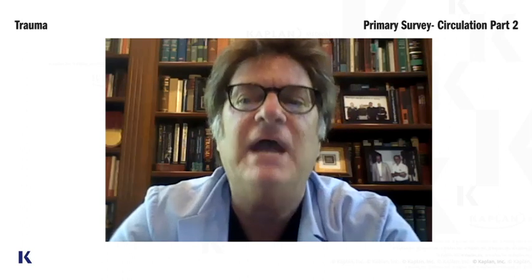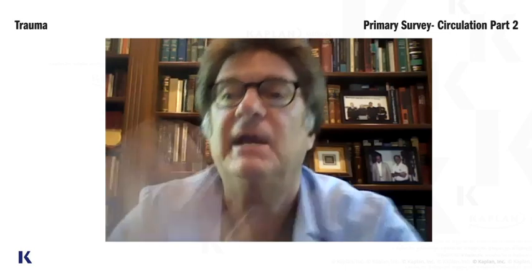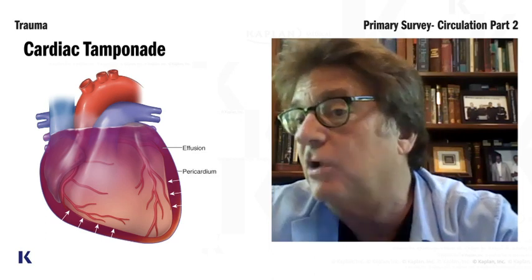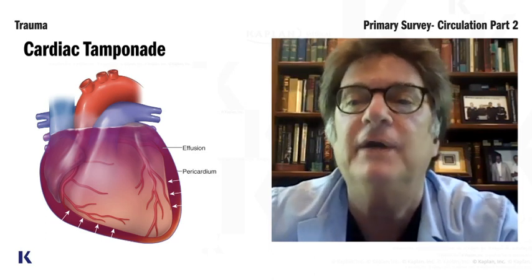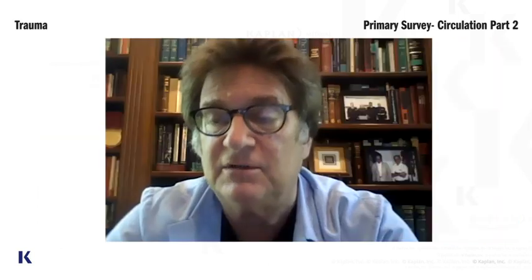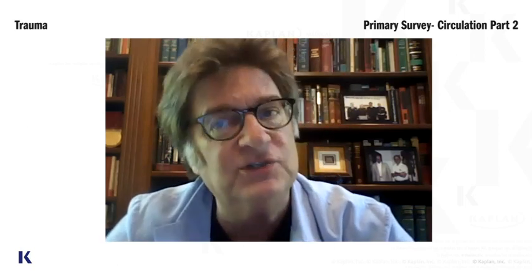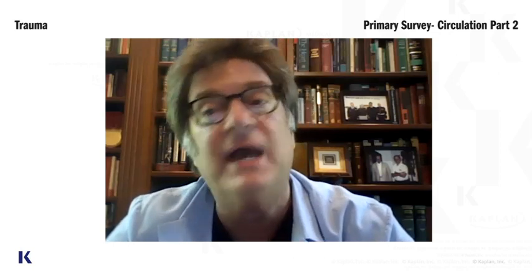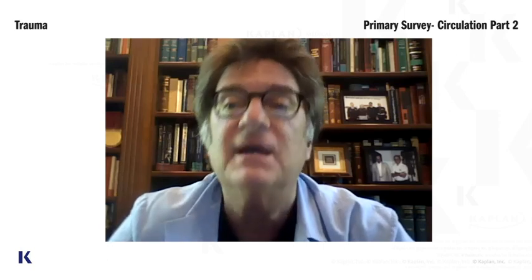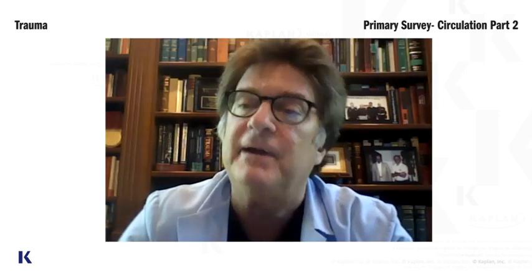There's another condition that causes hypotension, tachycardia, and distended neck veins — that's cardiac tamponade. It's caused by an injury where blood accumulates into the pericardial space. The reason you get hypotension and tachycardia is exactly the same as tension pneumothorax: the heart can't fill. The heart can contract fine, but it can't fill because of the blood in the pericardial space.